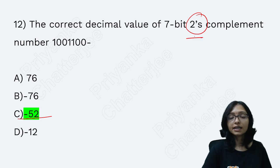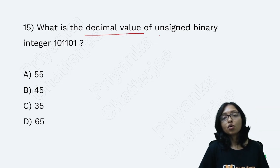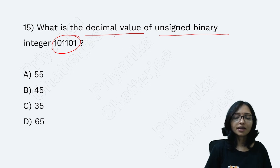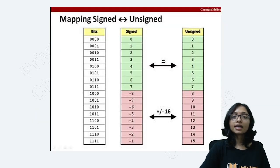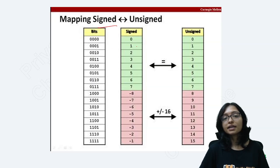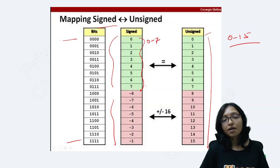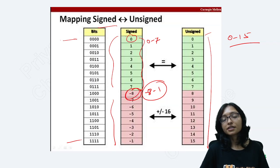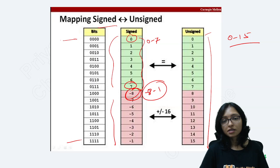MISD full form is Multiple Instruction Single Data. For an unsigned decimal value, simply convert to binary — the answer is 45. For a 4-bit signed vs unsigned range: unsigned allows 0000 to 1111, which is 0 to 15. For signed, the range is minus 8 to plus 7. Remember: the signed range for 4 bits is -8 to +7.